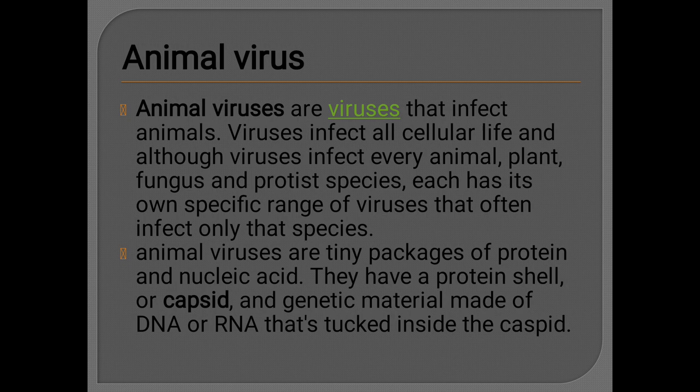Animal viruses are viruses which affect animals. They infect all cellular life. Although viruses infect every animal, plant, fungus, and protist, each has its own specific range of viruses that often infect only their species — a single virus cannot infect every type of organism; only specific organisms are infected by specific viruses. Animal viruses are tiny packages of protein and nucleic acid. They have a protein coat or capsid, and genetic material made of DNA or RNA that is enclosed inside the capsid.